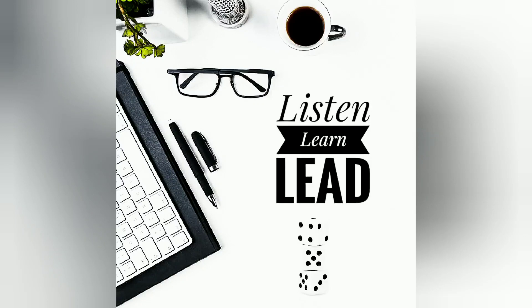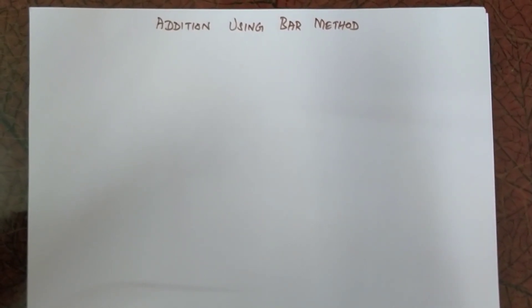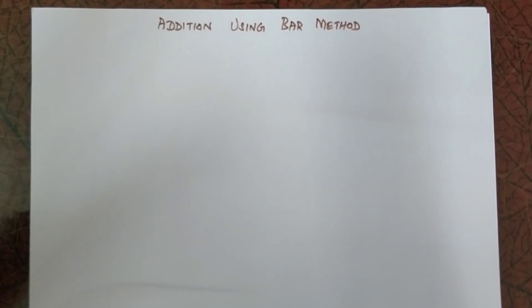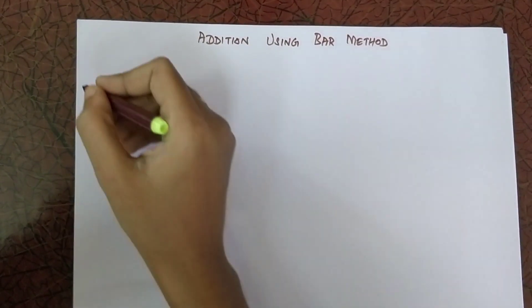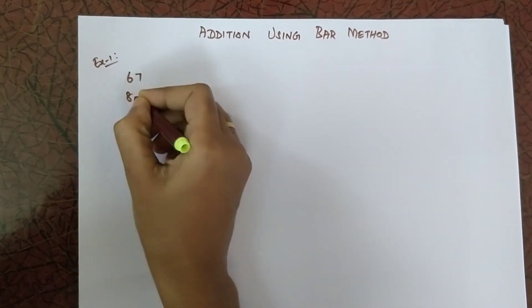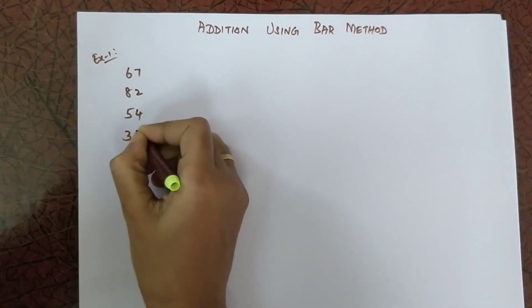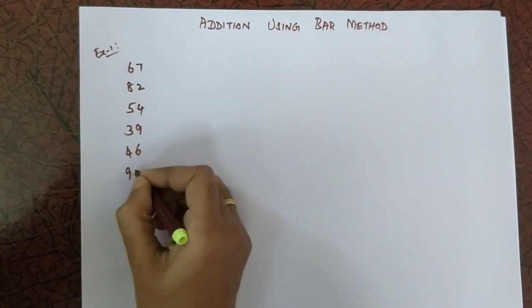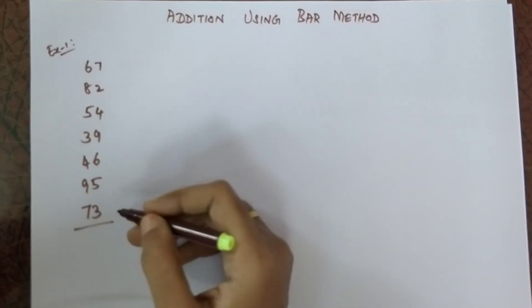Hello everyone, welcome to our channel. In my last video I explained about single-digit addition using the bar method. Now we are going to see how to add double-digit and triple-digit numbers using the same bar method. I will show you three different examples, so please watch carefully till the end.